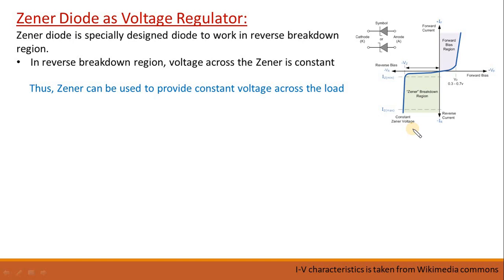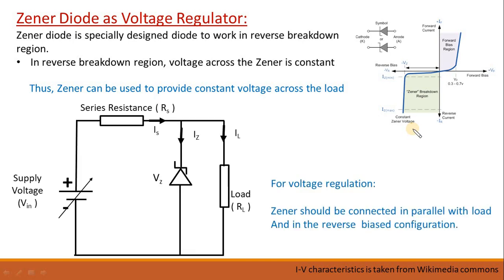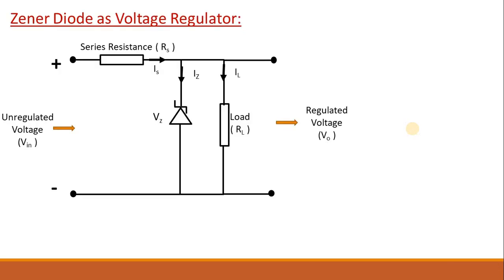Therefore we can connect it across a load and have a regulated voltage. In order to have voltage regulation we just need to connect a Zener diode in parallel with the load, and it must be in a reverse bias configuration. This is the shunt voltage regulated circuit. Here you can see from the left side we apply an unregulated voltage. We have a series resistance RS, and the load and Zener diode are in parallel.